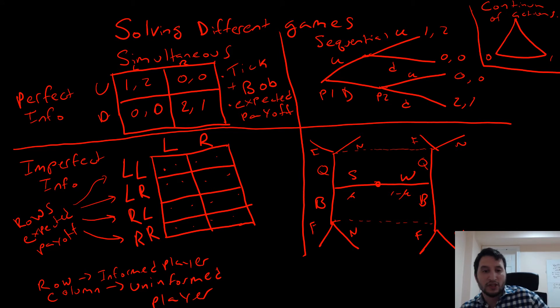In terms of solving these different games, we're going to look at our simultaneous move games. We're going to have tick and bob or comparison of expected payoff. This expected payoff is just the way we would solve for our mixed strategies.